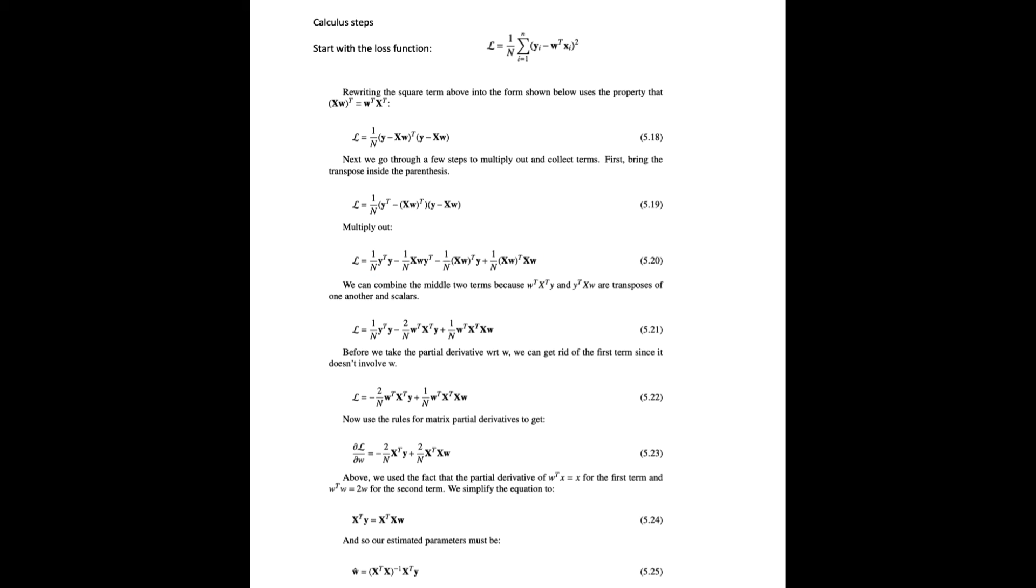We can combine the two middle terms, and now we have three terms. Before we take the partial derivative with respect to w, we can get rid of the first term since it doesn't involve w. So now we're down to two terms.